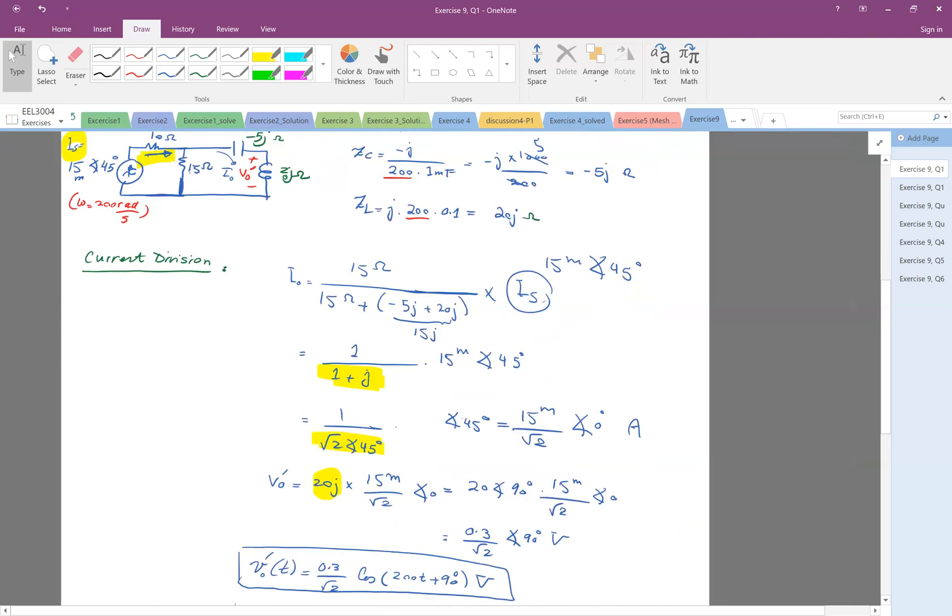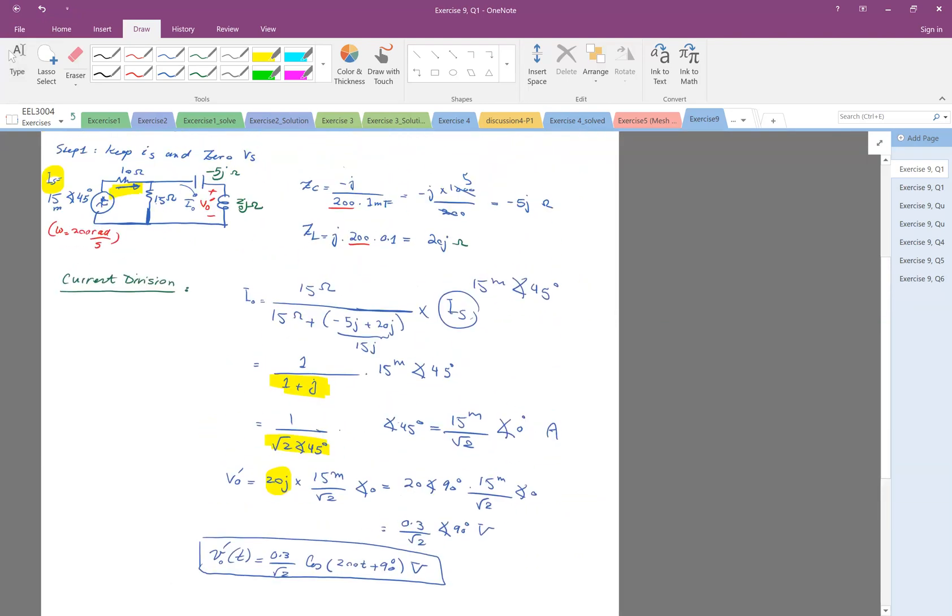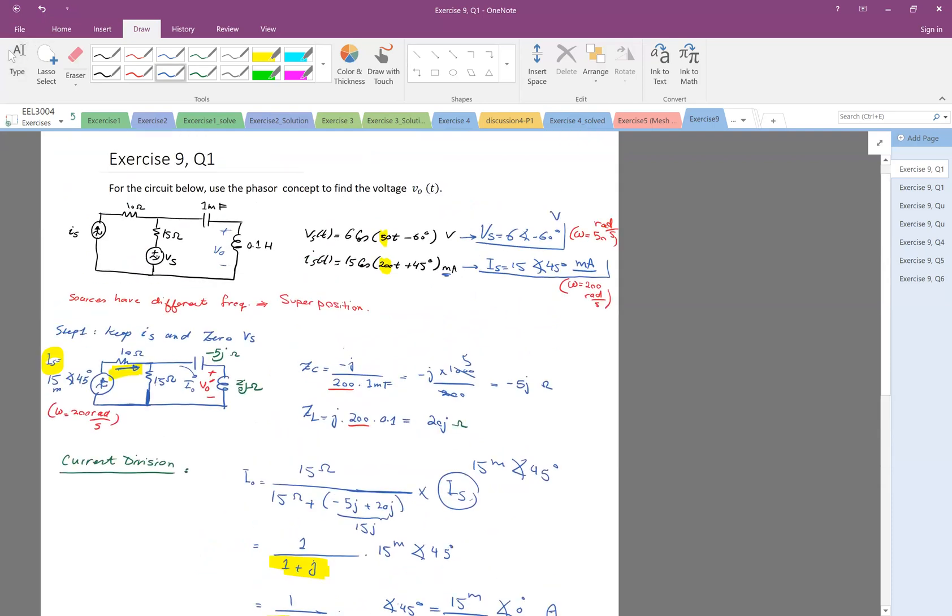So this is the phasor domain. Definitely at this point convert it to the time domain. So V0 prime t is the magnitude times cosine of the frequency, so in this case the frequency was 200, 200t plus 90 degrees. So this is the voltage if we only had the Is. Now we have to repeat a very similar process by keeping now the Vs and zeroing Is and find V0 and then we add them.